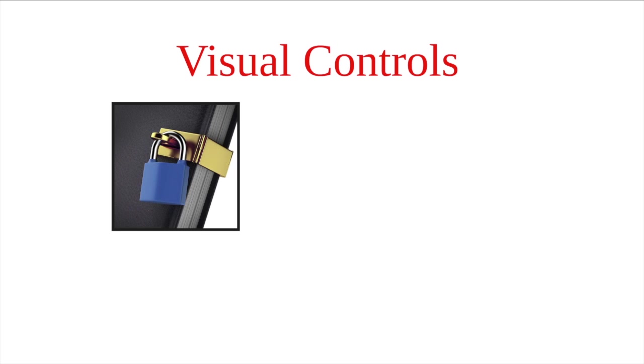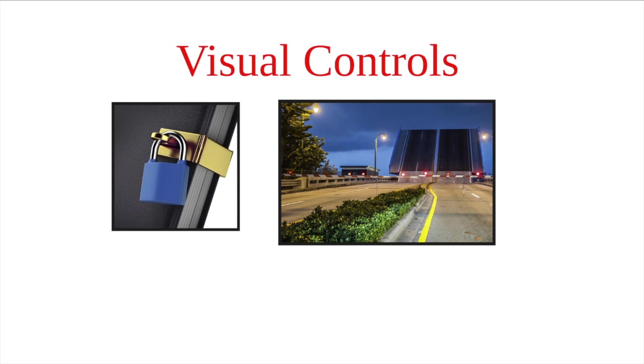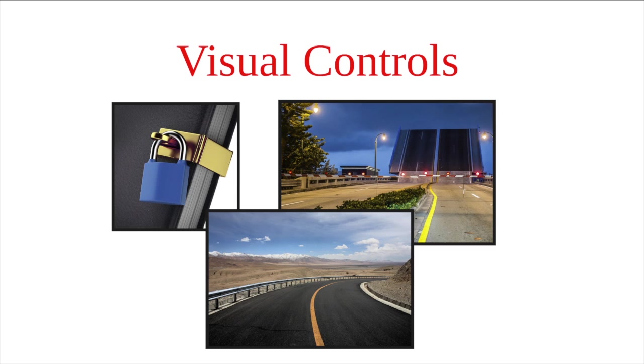Visual controls communicate information so that activities are performed according to standards. Examples of visual controls include locks, warning bells, gates, guardrails, or required fields you find in forms that you fill out online.